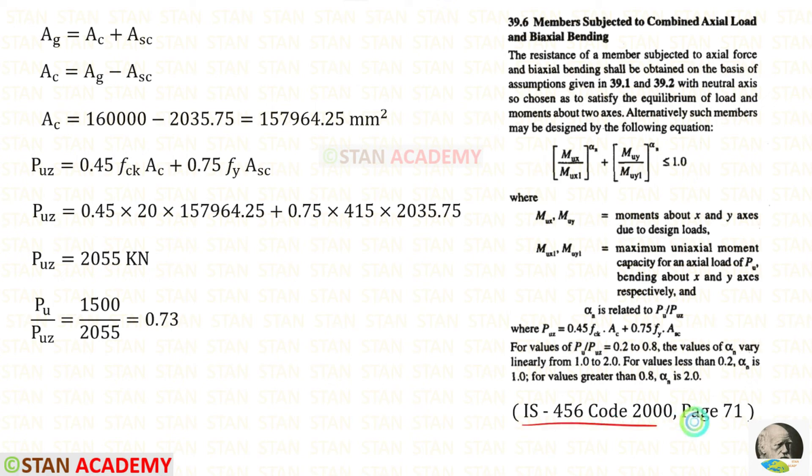Let us open IS 456 Code 2000, Page 71. Let us write this equation. In this equation, let us apply all of the values. So that for PUZ, we will get 2055 kilonewton.